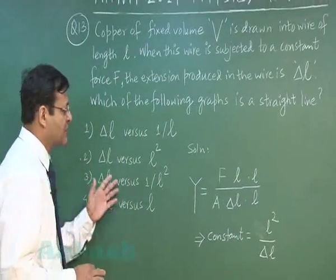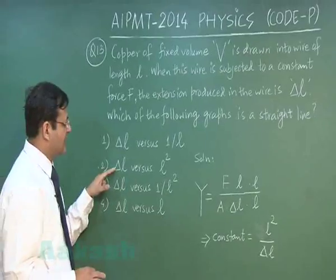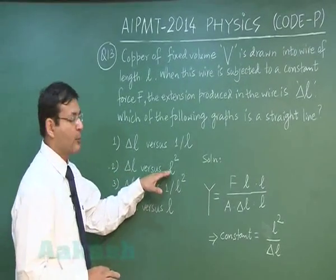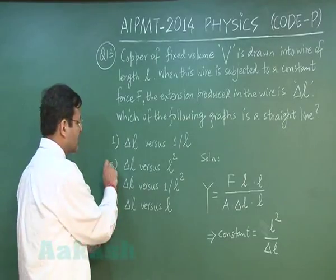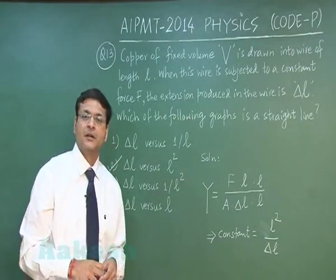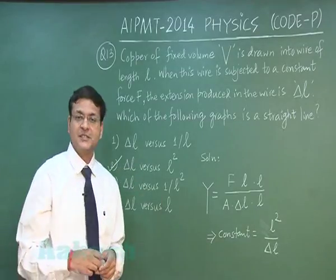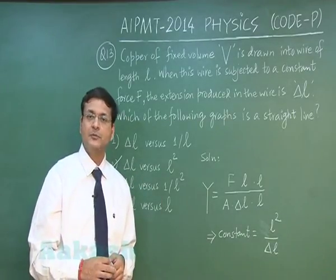So I have to look for an option in which delta L must be directly proportional to L square. So most appropriate answer will be option number 2 for this question number 13. You understand? So now let us discuss the next question that is question number 14.